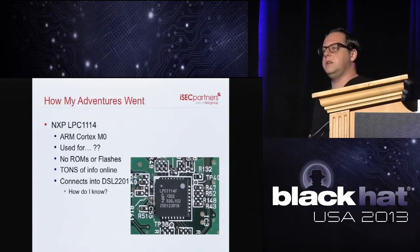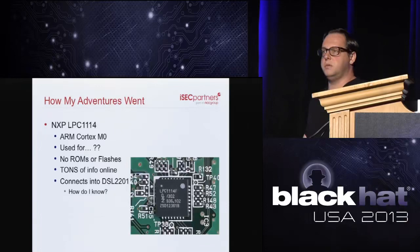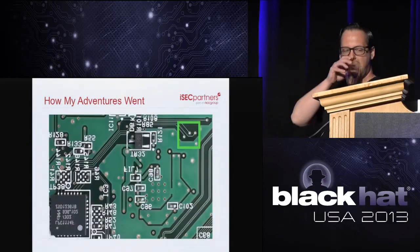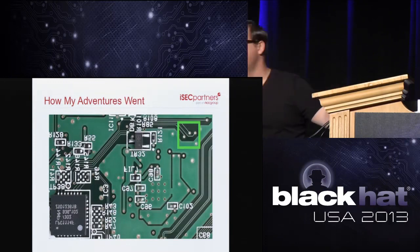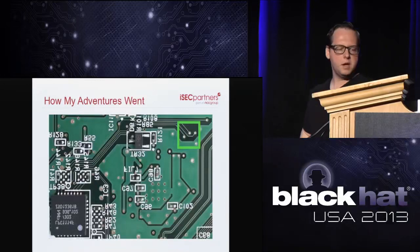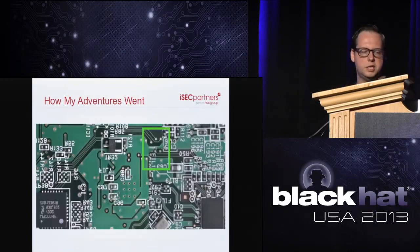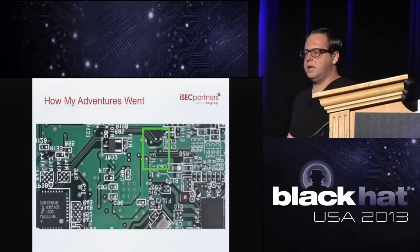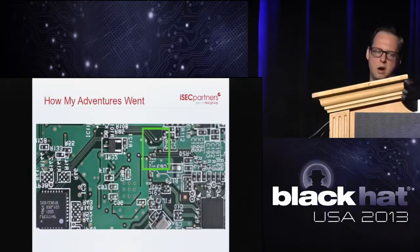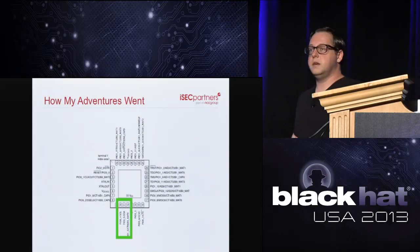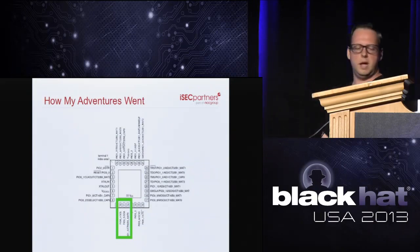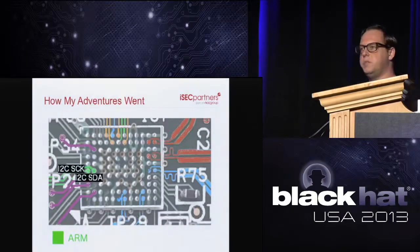Moving to the LPC1114 ARM Cortex: tons of information and data sheets are available online for this model. It does connect directly to Thunderbolt — visual inspection shows lines coming out that drop into vias in a pattern, and flipping the board shows those same vias coming into the Thunderbolt controller. With image editing, we can overlay both sides and confirm the direct connection. Looking at the data sheet, two of those connecting lines are I2C, meaning the ARM and Thunderbolt controller are communicating via I2C. We can add those two pins to our Thunderbolt pinout.